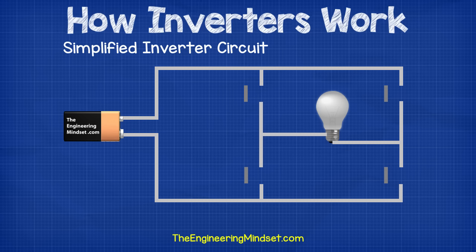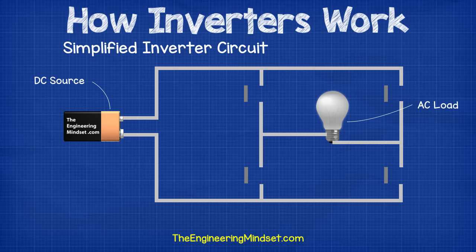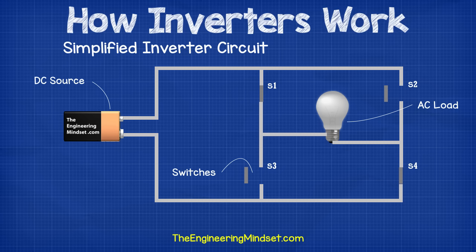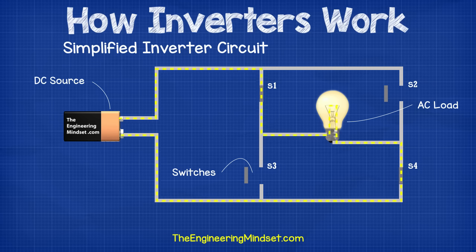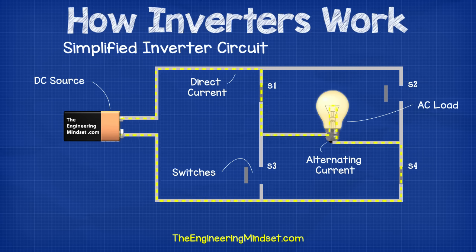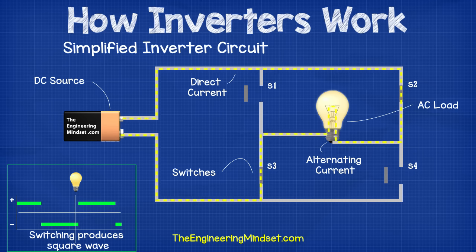So how do inverters work? Let's consider a simplified circuit where a DC source is used to power an AC load, represented by a lamp. To convert the DC to AC, we use four switches, paired so that switches two and three open when one and four close, and vice versa. This forces current through the AC load in alternating directions, so the lamp experiences an alternating current even though it's from a DC source. Closing switches one and four causes current to flow through one side of the lamp; closing two and three forces it through the other side. However, the lamp will not see a sine wave — the sudden switching only results in a square wave.